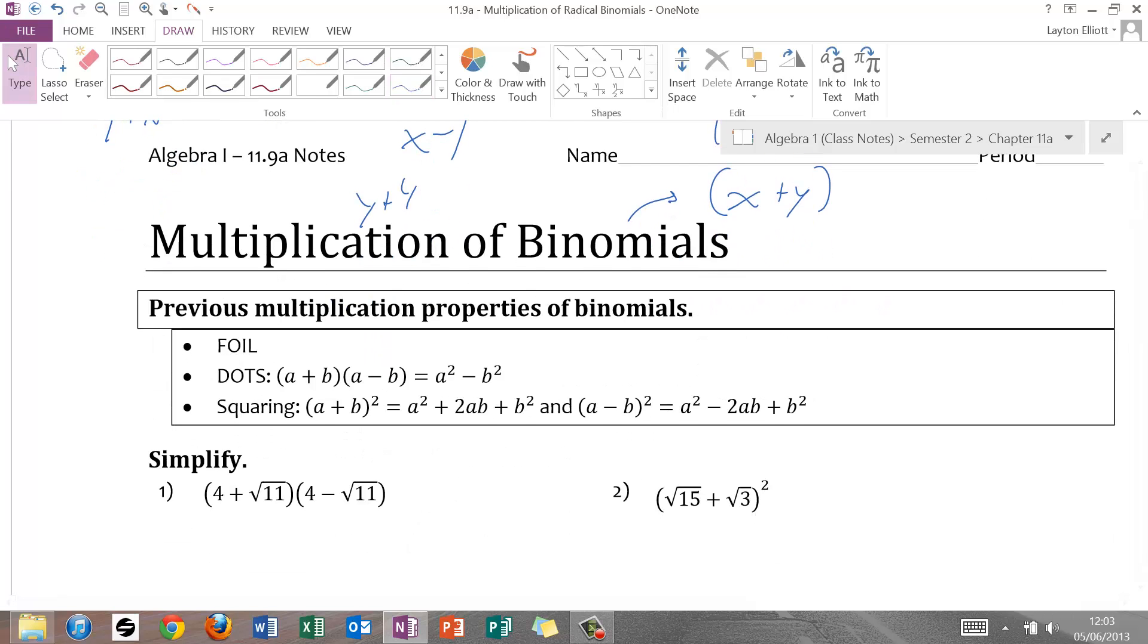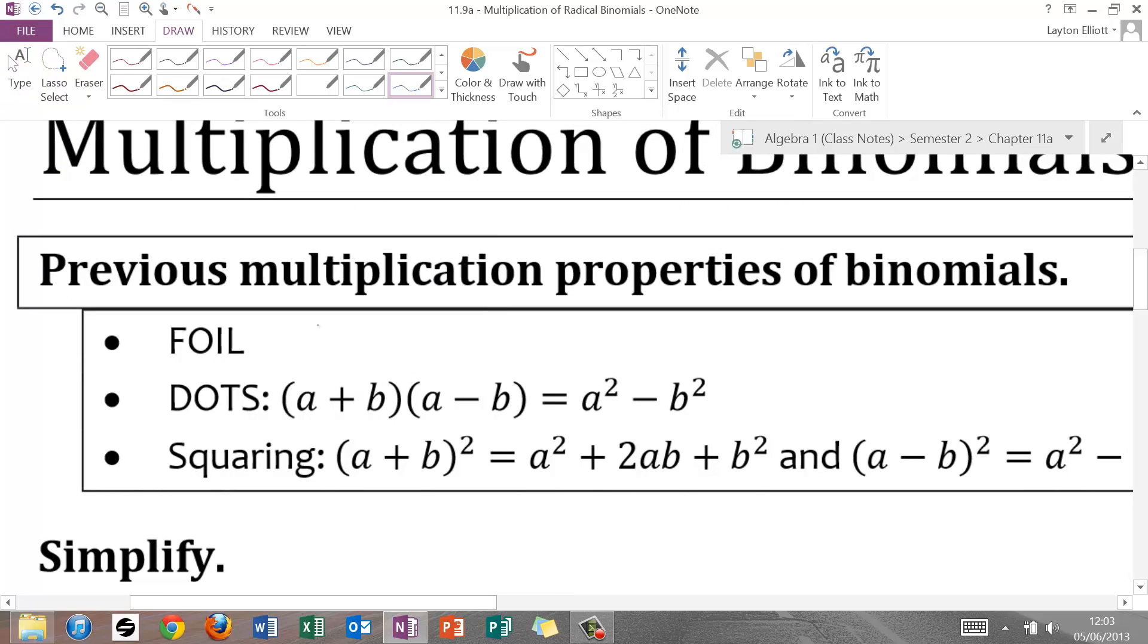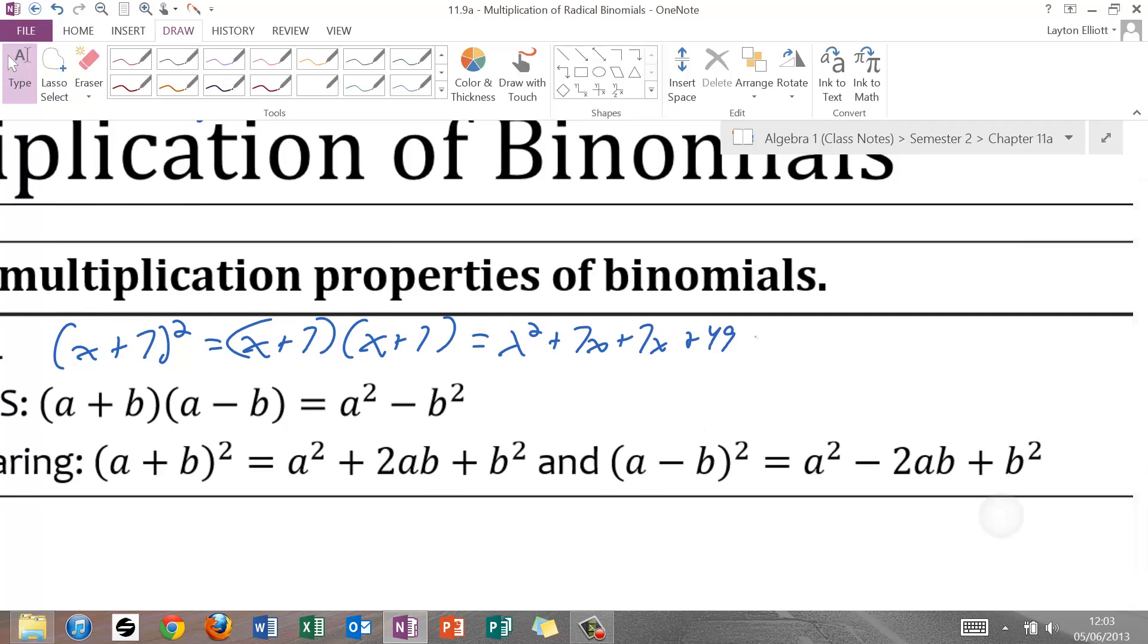So a few things we remember about binomials. Whenever we multiply two binomials together, we FOIL. So our example would be something like x plus 7 squared. We always do that as x plus 7 times x plus 7. First, outer, inner, last, x squared plus 7x plus 7x plus 49. And combine like terms wherever we can to get x squared plus 14x plus 49.